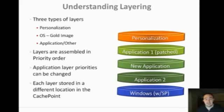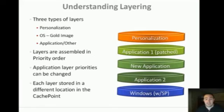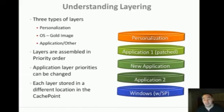Then there are application layers above that — and you'll notice I've labeled this 'application slash other.' We call them application layers because the vast majority will be applications, but really it could be anything that hits the file system or is removed from it. You could create a layer that removes a file, removes a registry key, adds a new registry key, or even one that's nothing but printers. It really doesn't matter — it's anything other than the gold image that's created by IT.